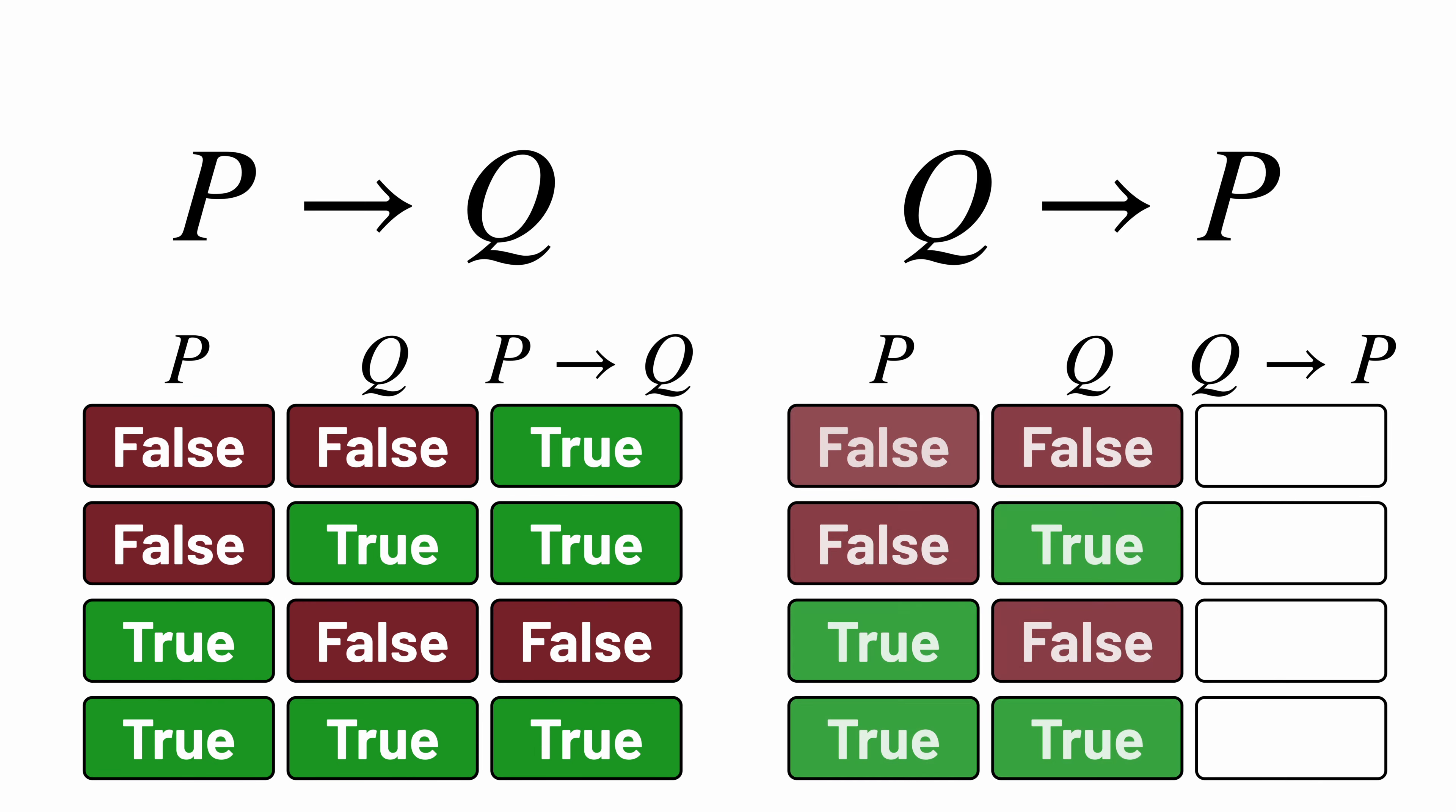Meanwhile, Q implies P means that if Q is true, then P is true. And when Q is false, the formula again is always true. Notice that these two truth tables are different. So P implies Q and Q implies P mean two different things.